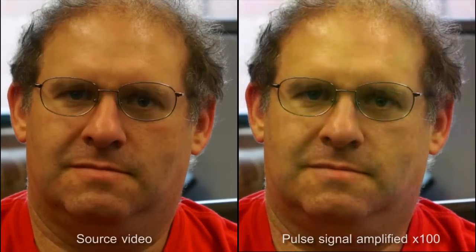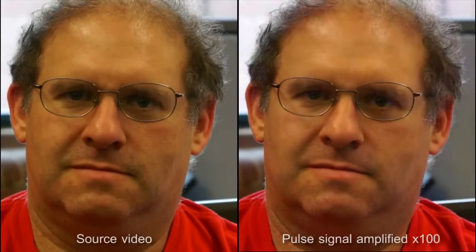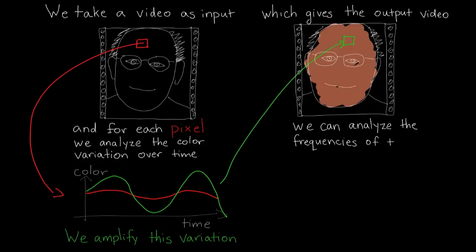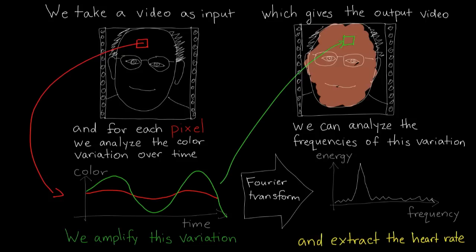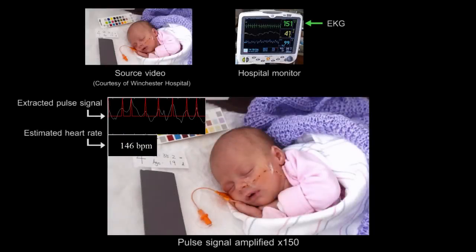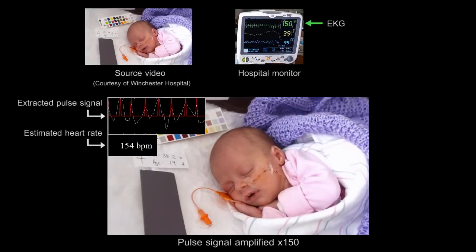In this example, the pulse signal is amplified 100 times. We can also analyze the frequencies of this signal and extract the heart rate. This doesn't require attaching any sensors to the patient, and the accuracy is comparable with hospital-grade monitors.